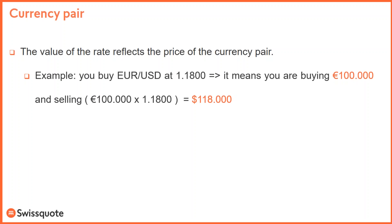EUR/USD is currently 1.18. If you buy EUR/USD now — buying one lot for example — you are buying 100,000 euros and selling 100,000 times 1.18, which is 118,000 dollars. So you buy euros and the broker is selling dollars for you at the same time at the current market rate.